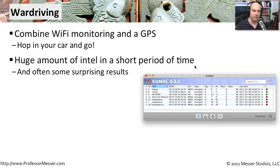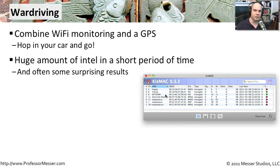If you're using different software to find these access points, here's one on my Mac called Kismac. You can see just sitting in one place in my house, not even driving around, you can see all of the different access points around you — the ones not only in your house but elsewhere. Now imagine driving around your entire neighborhood, around your entire city. You may be surprised at exactly what you're able to see.